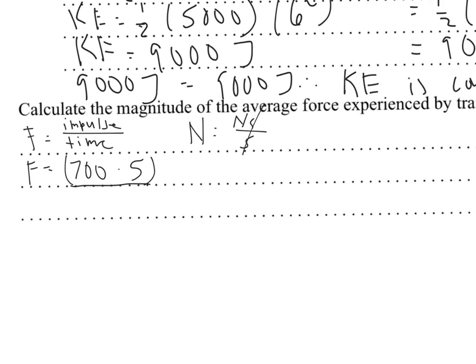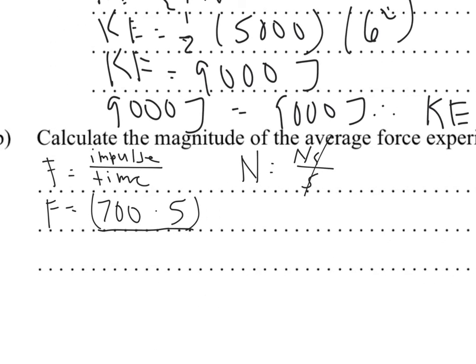So, you have 700 times 5, which is the impulse, the change in momentum, over 2, which is going to yield a force of 3,500 over 2, which gives you a force of, an average force of 1800 newtons.